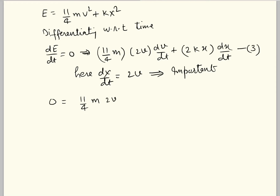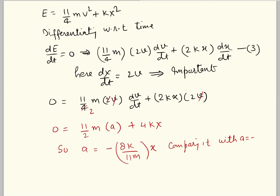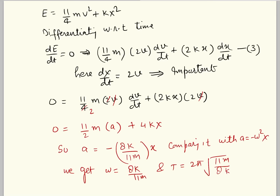Substituting dx/dt = 2v into the differentiated equation: 0 = (11/4)m · 2v · (dv/dt) + 2kx · 2v. Dividing through by v: 0 = (11/2)m · (dv/dt) + 4kx. Since dv/dt is the acceleration a of the center of mass: a = −(8k/11m) · x. Comparing with a = −ω²x, we get ω² = 8k/11m, and therefore the time period T = 2π√(11m/8k).